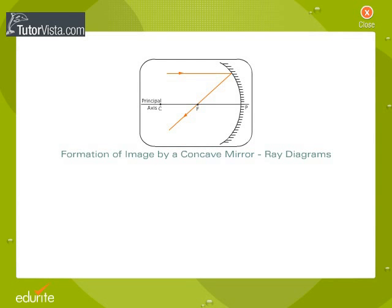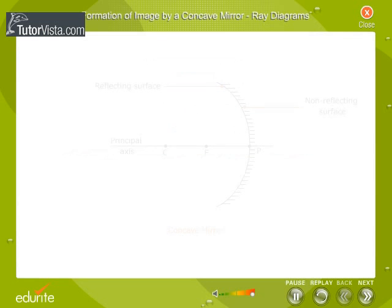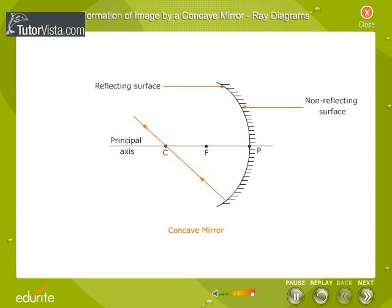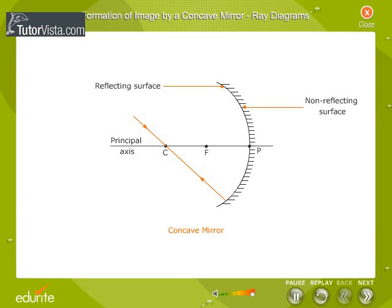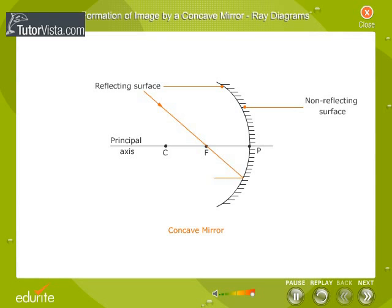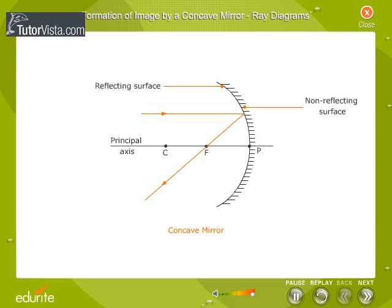Formation of image by a concave mirror — ray diagrams. In order to know the position and nature of the image formed due to reflection of light from a spherical mirror, generally two rays coming from the same point of an object are considered. Although an object emits rays of light in all directions, we need to consider only two convenient rays. The image is formed at the point of intersection of these reflected rays.